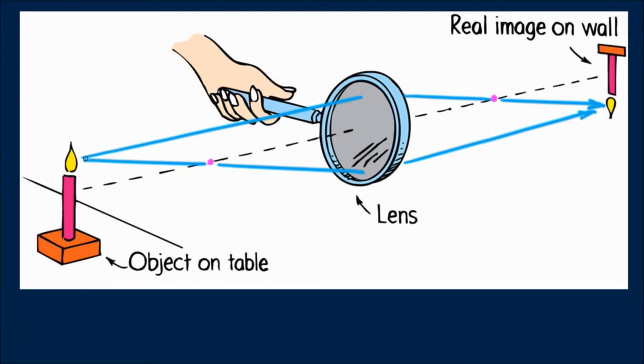Where they meet, the image of the flame is formed. And there's no net refraction of light that passes through the center of the lens. Not surprisingly, it contributes to the image of the flame.